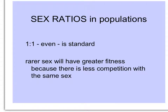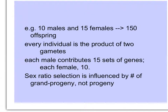In a population, having the same numbers of males and females — an even sex ratio of one-to-one — is standard. If one sex is rarer than the other, it will have greater fitness, because there's less competition with its own sex to mate with the other sex. Let's look at an example: if we have 10 males and 15 females, and they mate to produce 150 offspring...